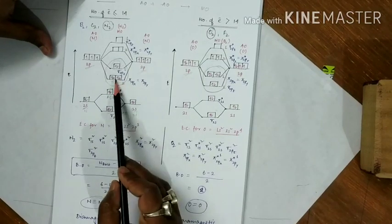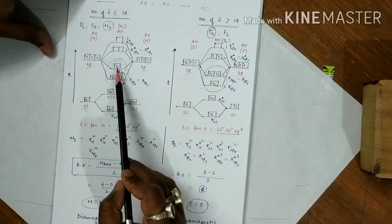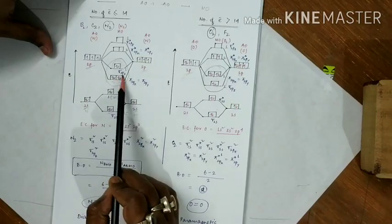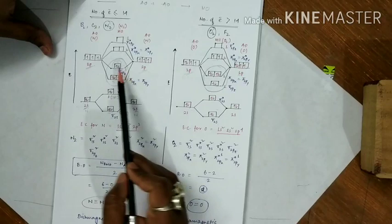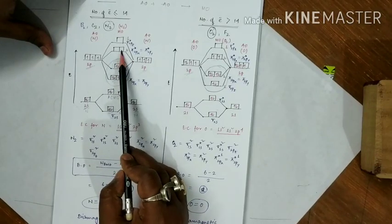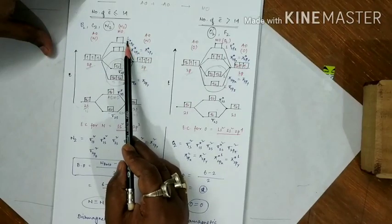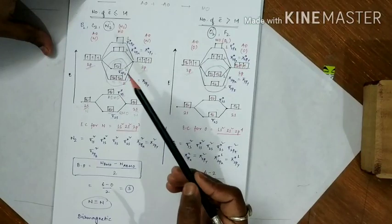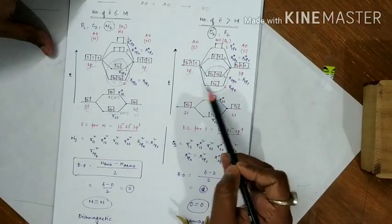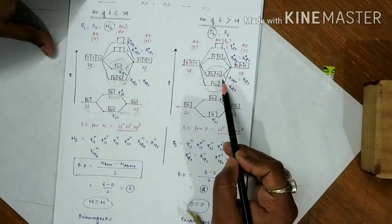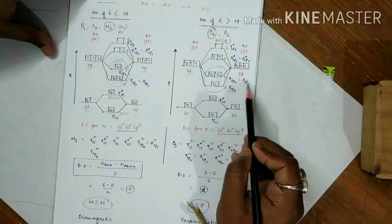The σ2pz orbital forms a sigma bond because the z-axis is the intermolecular axis. The anti-bonding counterparts are written as π*2px = π*2py and σ*2pz. For each bonding orbital you write, there is a corresponding anti-bonding orbital — just add a star. In the second diagram (for >14 electrons), only σ2pz and π2px/π2py swap their energy order; everything else is the same.